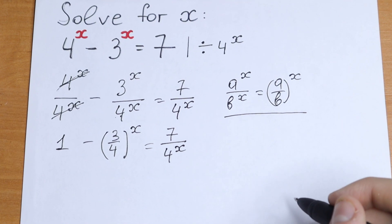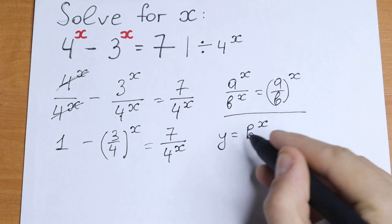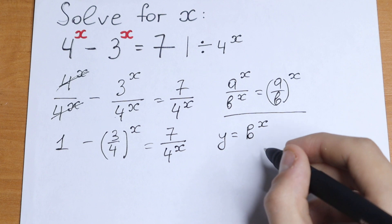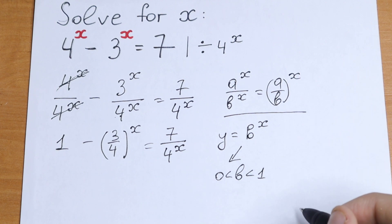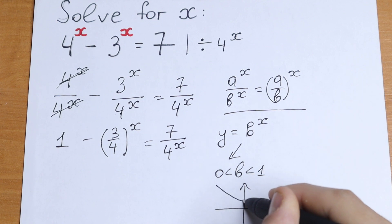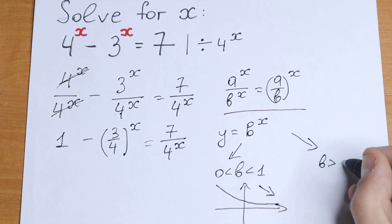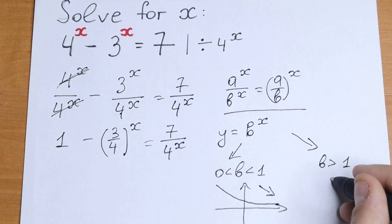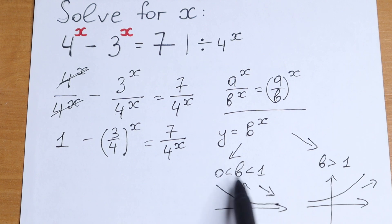Next, let's recall the exponential function y equals b to the power x. There are two cases. The first case is when b is between 0 and 1 — the function will be a decreasing function. The second case is when b is greater than 1 — the function will be an increasing function. So: between 0 and 1 gives a decreasing function; greater than 1 gives an increasing function.